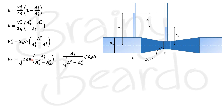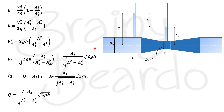Substituting the expression for v2 into the continuity equation Q = a2·v2: Q = a2 · a1/√(a1² − a2²) · √(2gh) = a1·a2/√(a1² − a2²) · √(2gh). However, since Bernoulli's equation is derived with no losses assumed, this Q does not account for losses. Therefore, this Q is not the actual discharge — we call it the theoretical discharge, Q_theoretical.